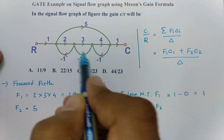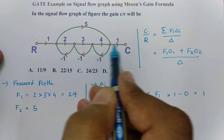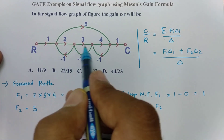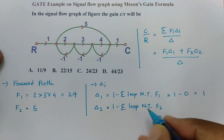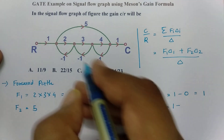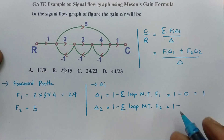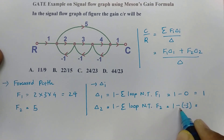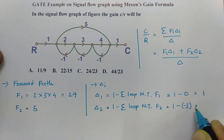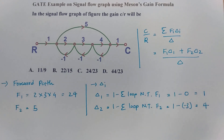Now for delta2: delta2 equals 1 minus the summation of loops not touching forward path F2. There is one loop not touching this path, and that loop is 3 into minus 1, giving minus 3. So delta2 equals 1 minus (minus 3), which is 1 plus 3, so delta2 equals 4.